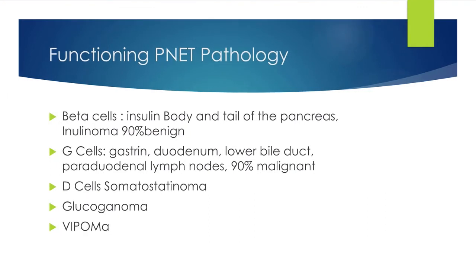In the pancreas we have the islets of Langerhans with beta cells that secrete insulin — these are the origin of insulinomas. Insulinomas are 90% of the time benign and 90% of the time a single solitary lesion, though they can be multiple. We also have G-cells that secrete gastrin, which are found in the duodenum and intramural stomach but can also be in the lower bile duct.